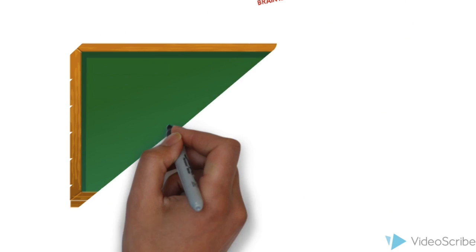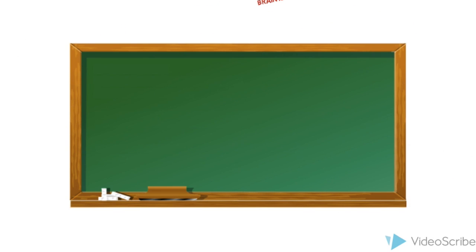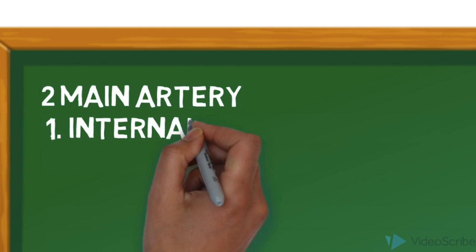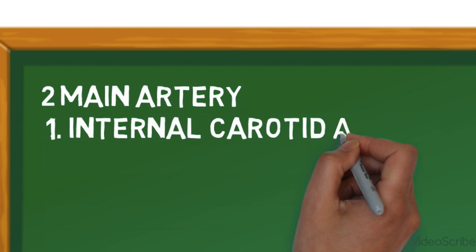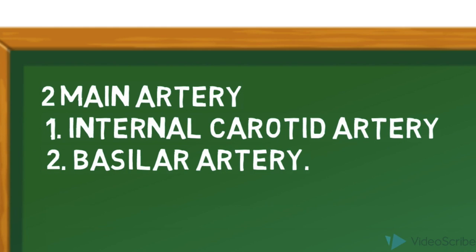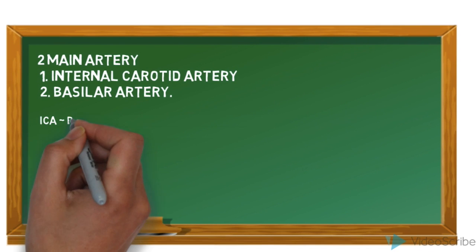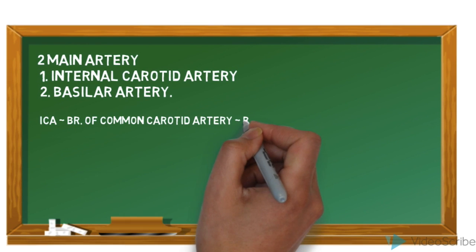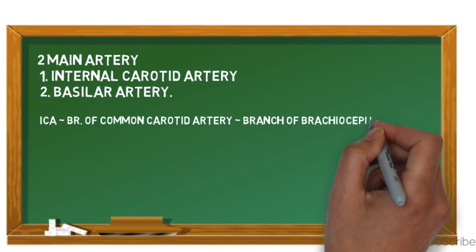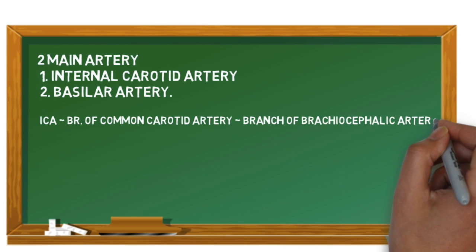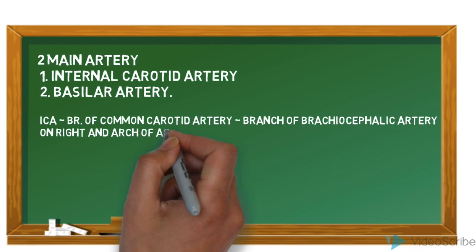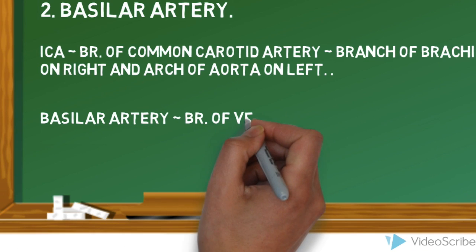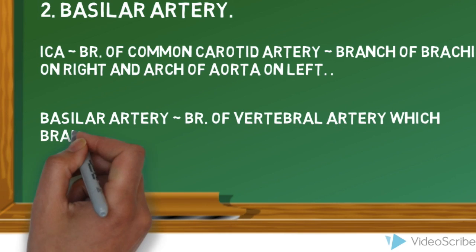Now we will learn the arteries which supply the brain. There are two main arteries: the internal carotid artery and the basilar artery. The internal carotid artery branches from the common carotid artery, which is a branch of the brachiocephalic artery on the right and the arch of the aorta on the left. The basilar artery is a branch of the vertebral artery, which branches from the subclavian artery.